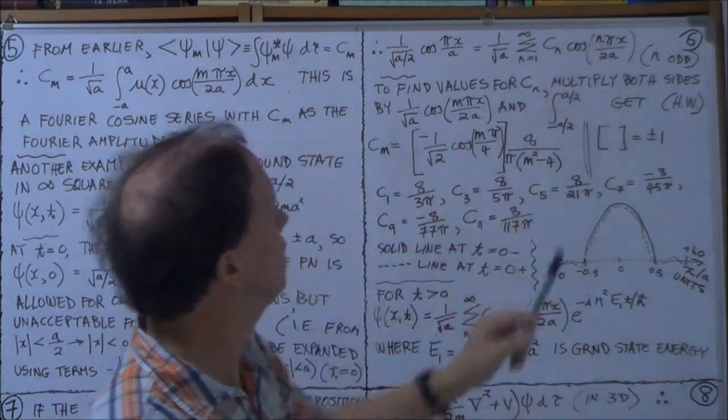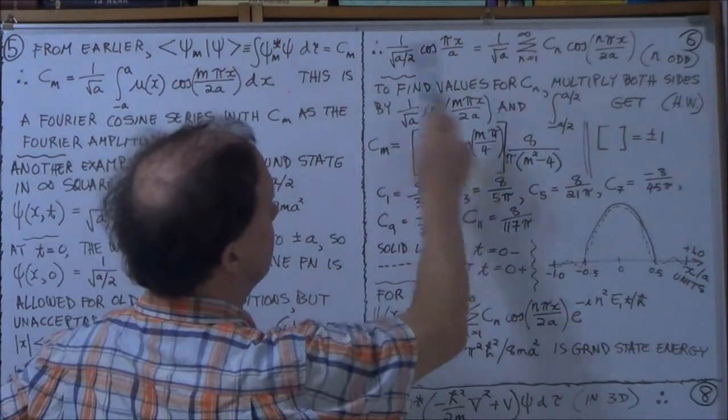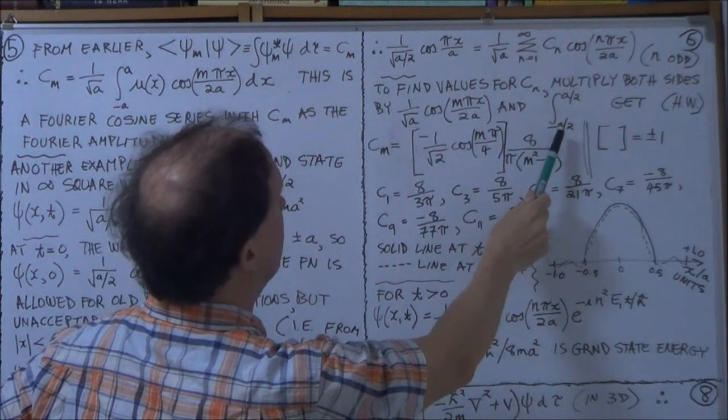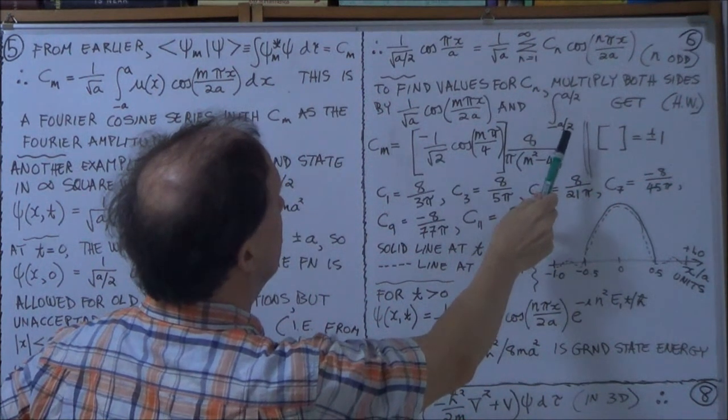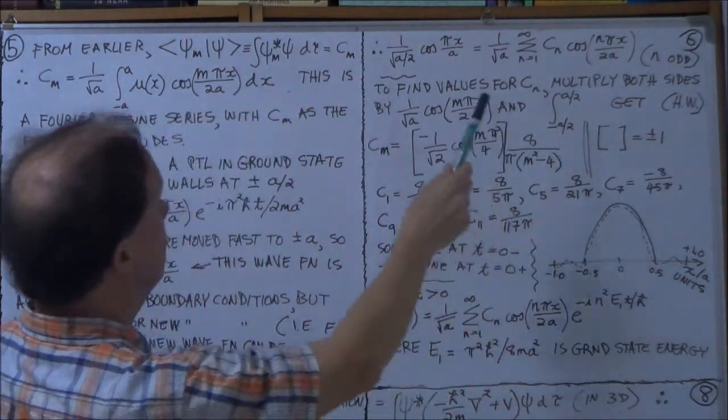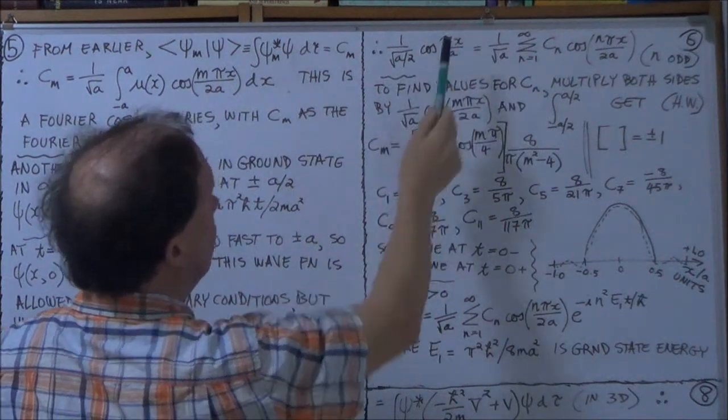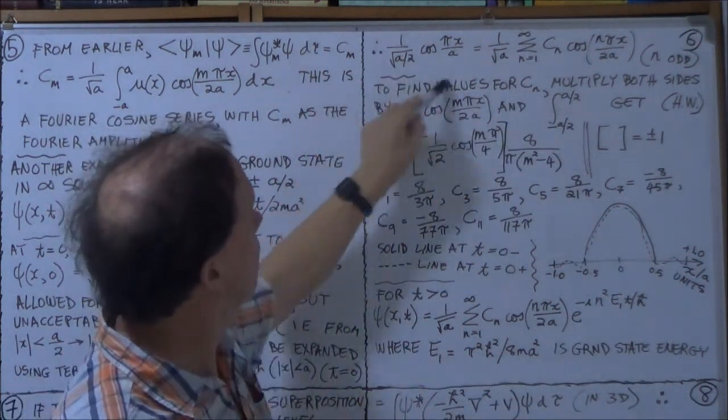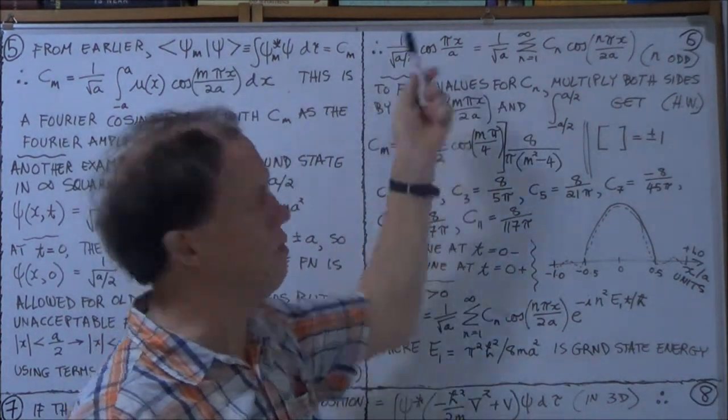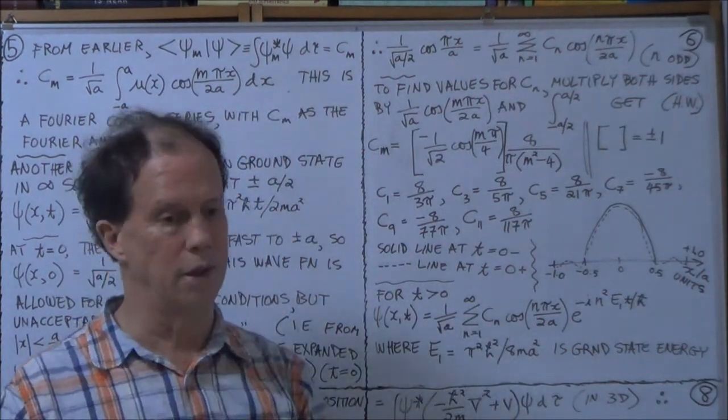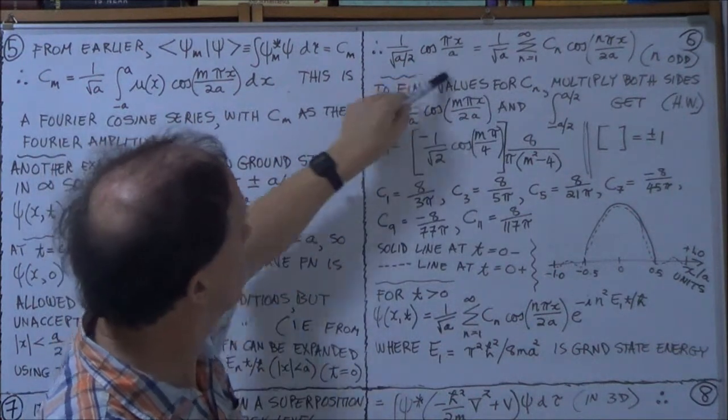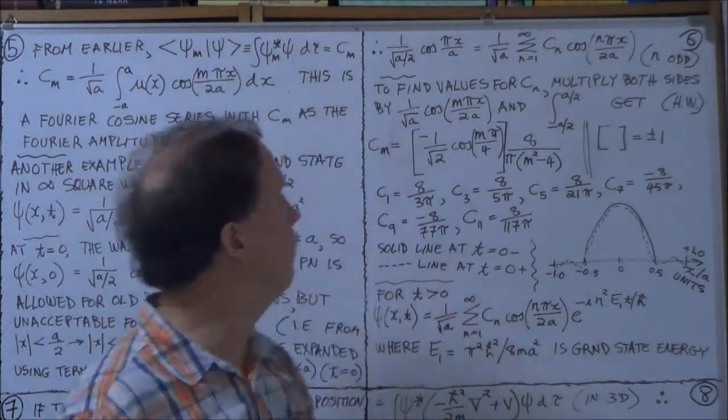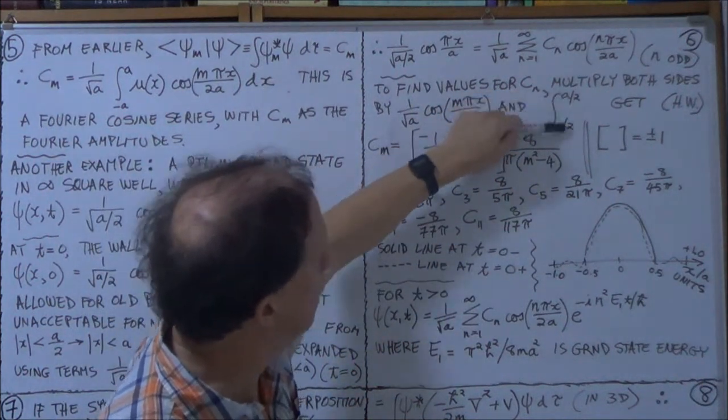So multiply both sides by cosine m pi x over 2a. You got an n here. And then with the result, multiply both sides with this, then you integrate it over, now let's see. We're talking about this, this is defined only in the range of a over 2 and minus a over 2, because beyond that, this we got, that's what the wave function was before the sudden expansion. So at time t0, this wave function here was just 0 outside the range of a over 2. So that's why here, that makes sense, those are the limits of your integration.